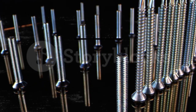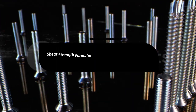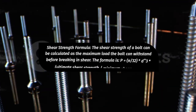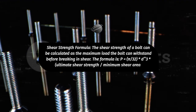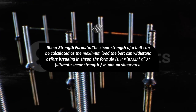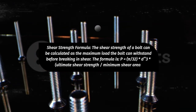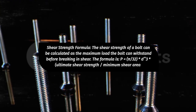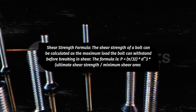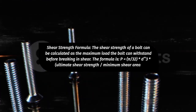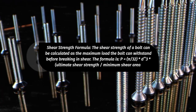Shear strength formula — The shear strength of a bolt can be calculated as the maximum load the bolt can withstand before breaking in shear. The formula is: P = (π/32) × d³ × ultimate shear strength × minimum shear area.